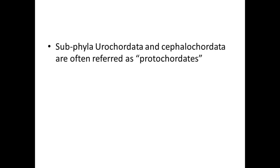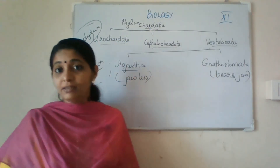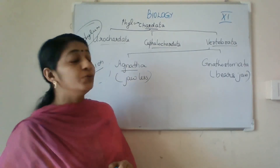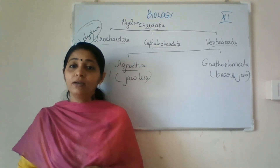Subphylum Urochordata and Cephalochordata are often referred to as Protochordates — meaning the early or primitive chordates. So subphyla Urochordata and Cephalochordata are often referred to as Protochordates. Now we have seen the features of subphylum Urochordata and Cephalochordata, and now we will learn about subphylum Vertebrata.